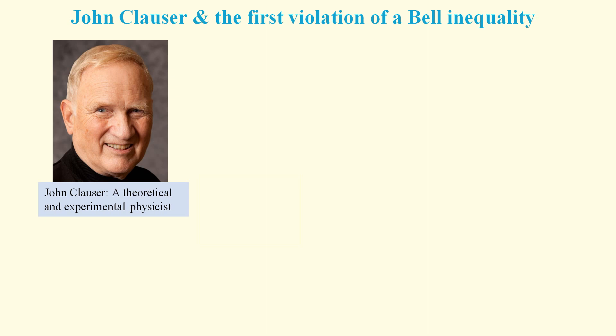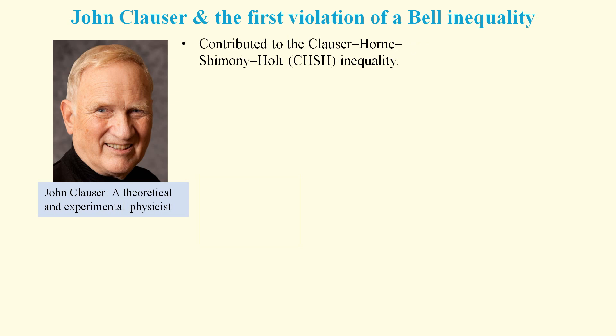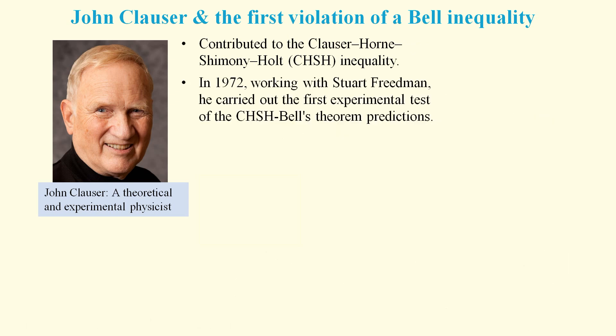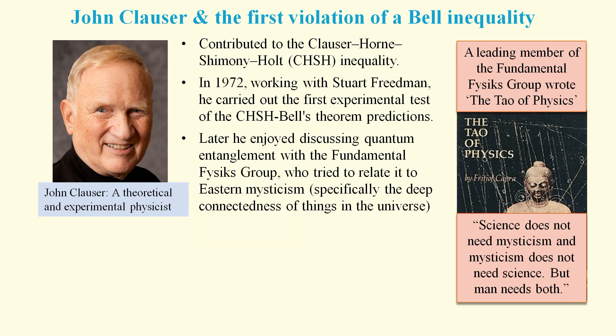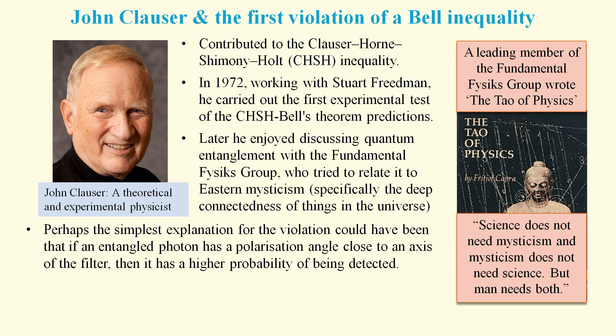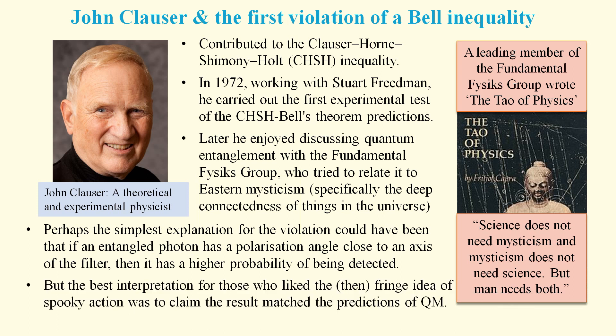John Clauser had a lot to do with the first ever Bell test. He was one of the authors of the CHSH inequality, and working with Stuart Friedman, he performed the first Bell test experiment in 1972. Later, he enjoyed discussing entanglement with the fundamental physics group, who wanted to use entanglement to promote Eastern mysticism. There was a very simple way to explain the results: if an entangled photon has a polarization angle close to an axis of the filter, then it has a higher probability of being detected. But if it was fair to assume that the undetected photons could be dismissed, then this was a sensational and highly newsworthy result that appeared to support the very weird idea that spooky action at a distance was real, and it would question the fundamental nature of reality.